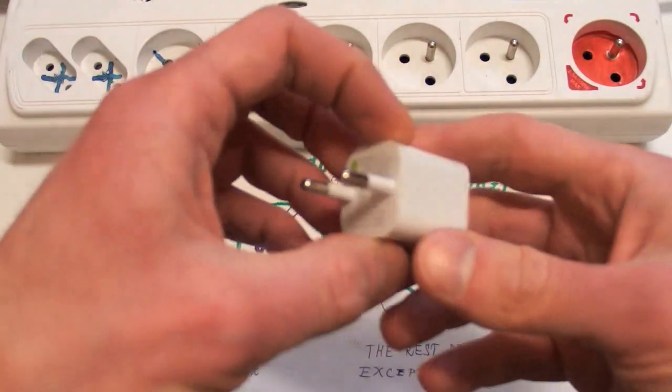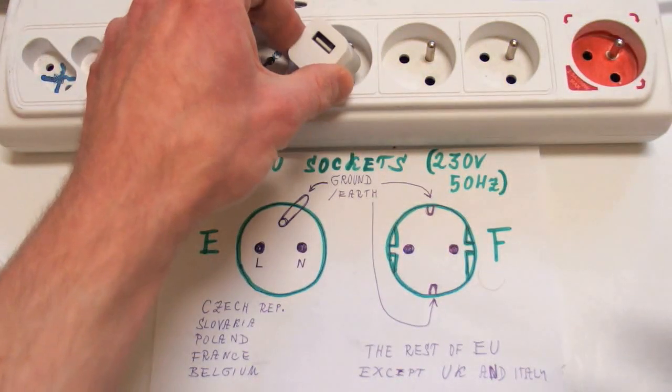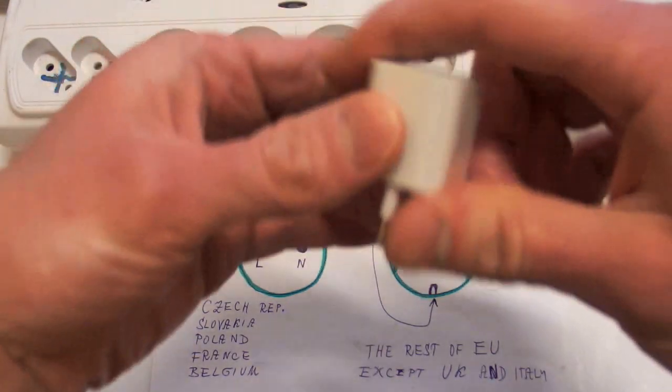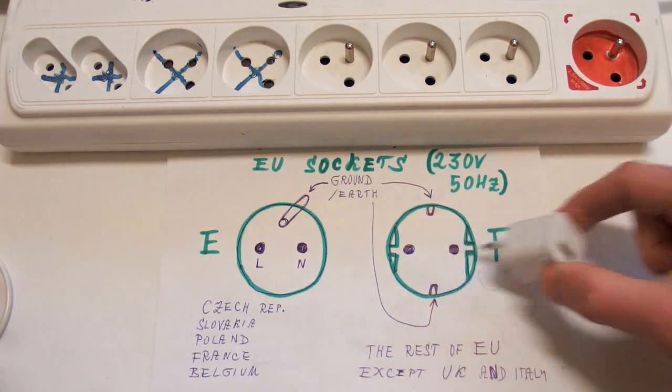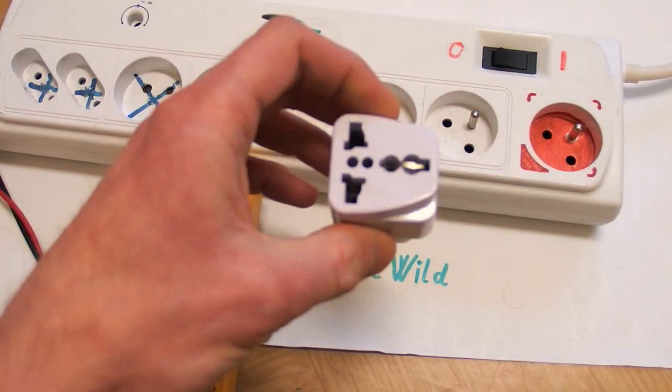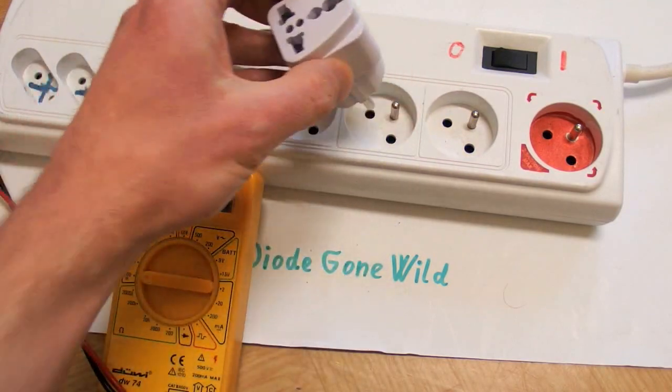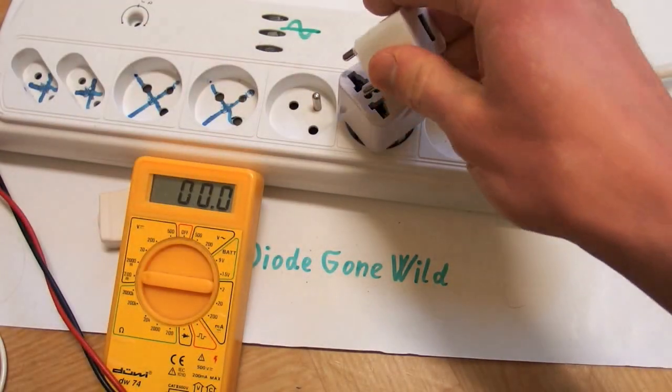But let's go back to my power supply. It just doesn't fit into my socket because of the ground pin. But I think it would fit here because the ground contacts are farther away. To be able to test it, I will have to use my very dangerous Chinese adapter. Let's plug it in.